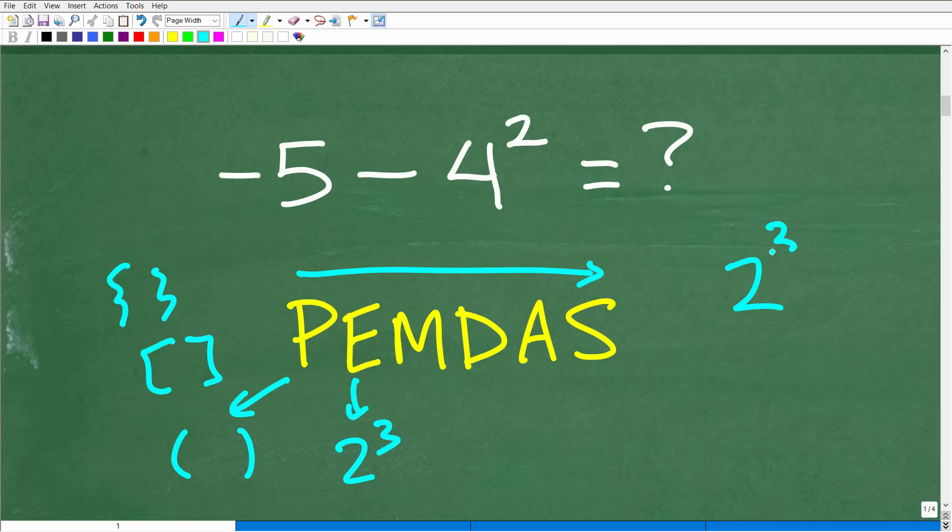So when you have a power like 2 to the 3rd power, this part of the power here is called the exponent. So the E is basically powers next. Now, the next thing is M and D. Now, a lot of students confuse this. They think the M is multiplication and the D is division. That's what it stands for.